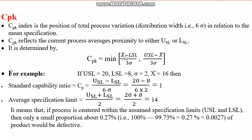CPK is given as the minimum of two values: (USL minus X-bar) divided by 3 sigma, and (X-bar minus LSL) divided by 3 sigma. You calculate both values and whichever is less is taken as CPK.